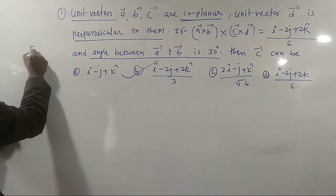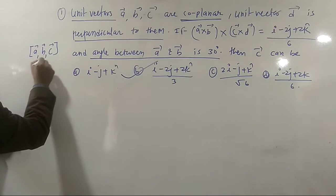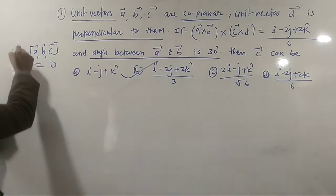Coplanar means this A, B, C box, which we call a scalar triple product, is equal to zero. That's the first point.